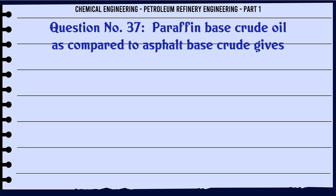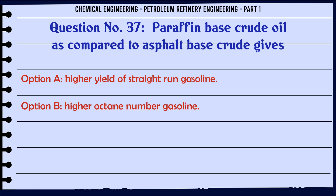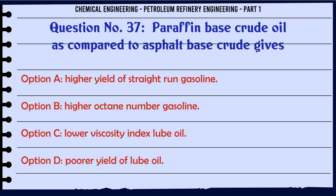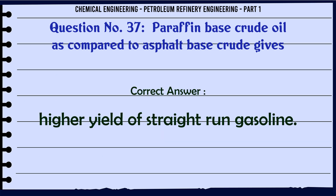Paraffin-based crude oil as compared to asphalt-based crude gives: A. Higher yield of straight-run gasoline, B. Higher octane number gasoline, C. Lower viscosity index lube oil, D. Poorer yield of lube oil. The correct answer is Higher yield of straight-run gasoline.